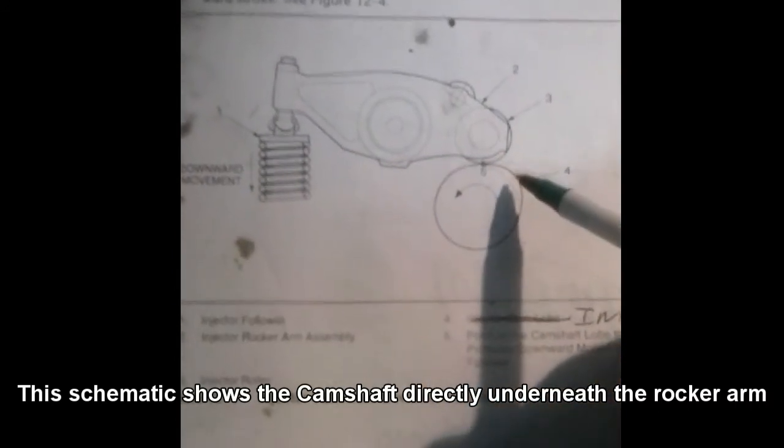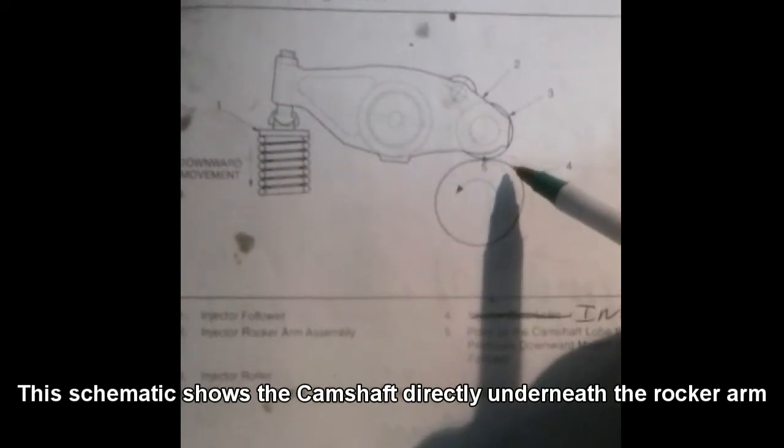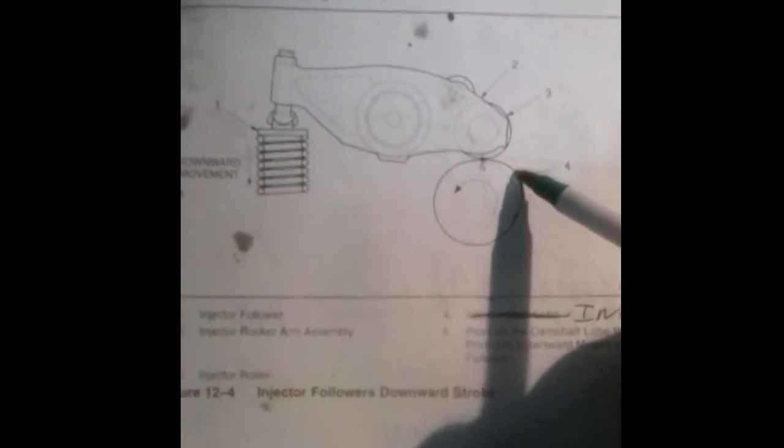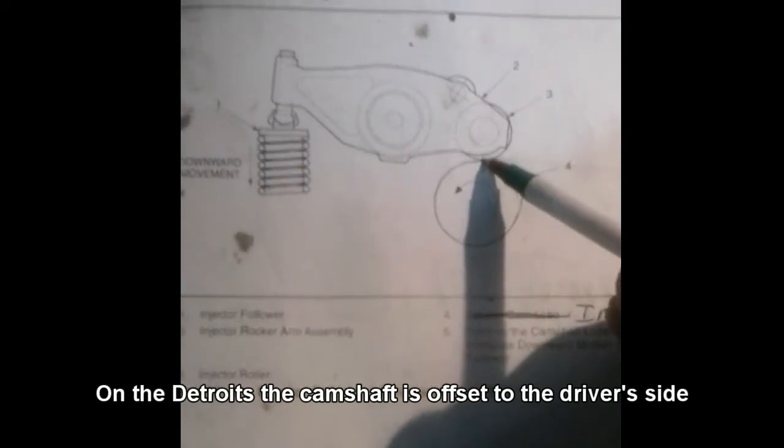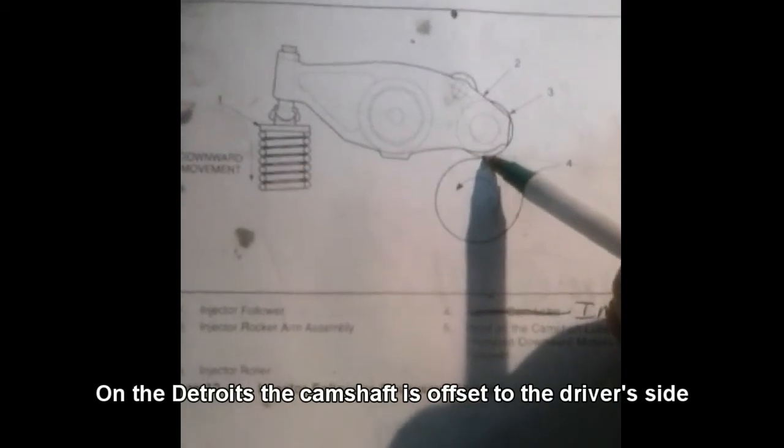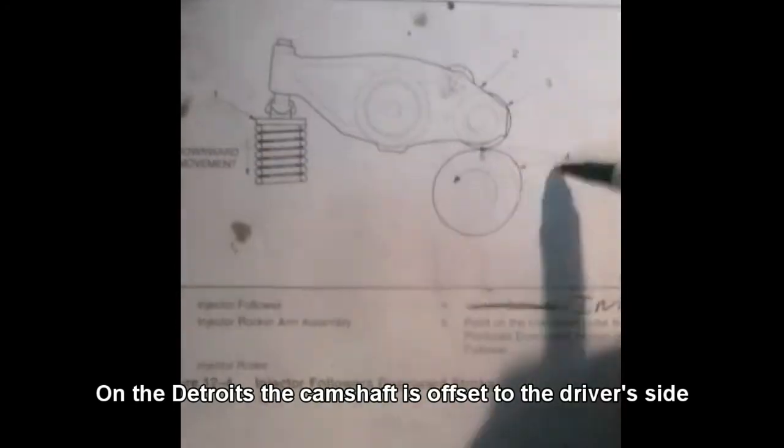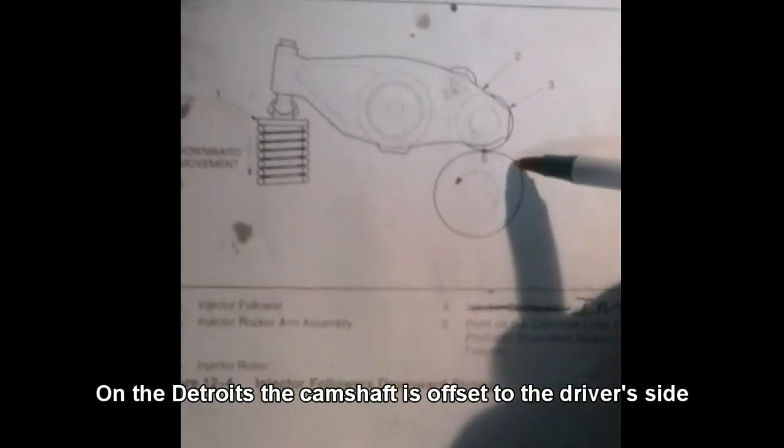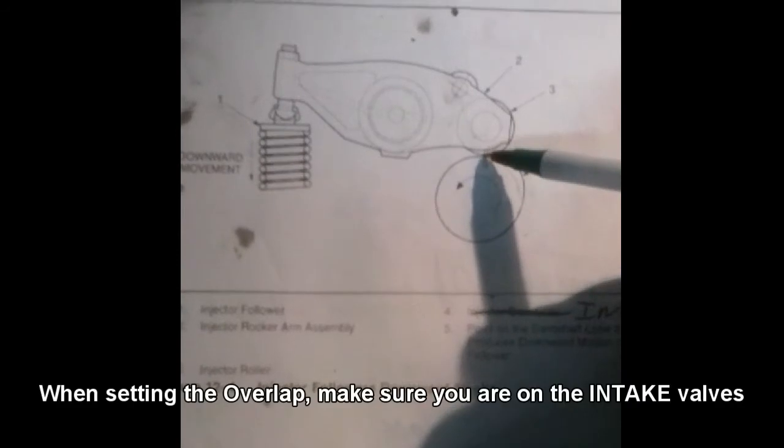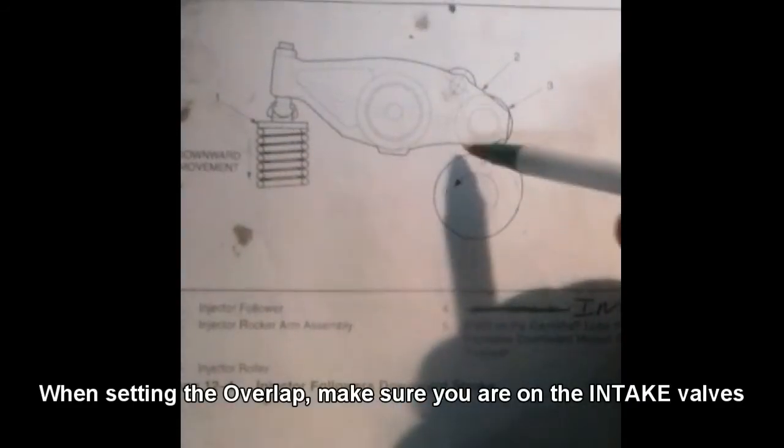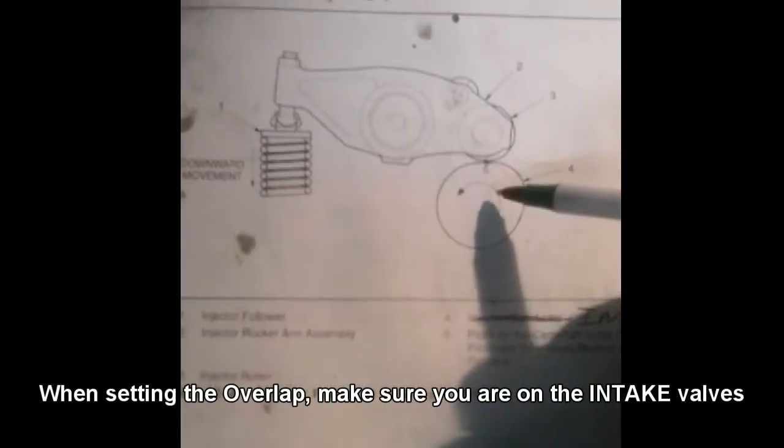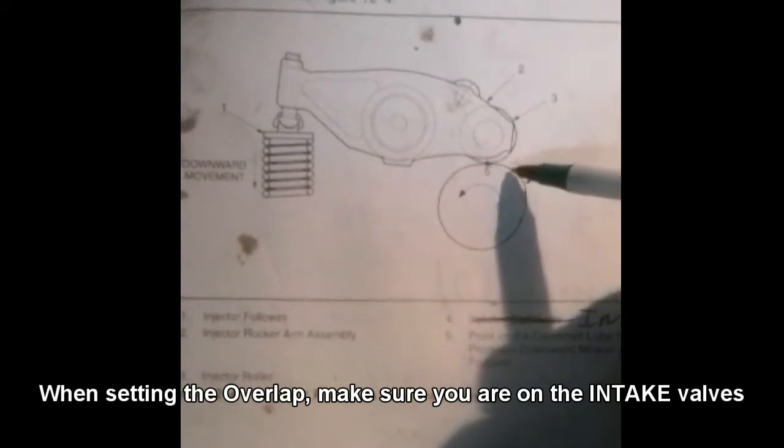On your intake valve, you will rotate the camshaft to directly under the roller bearing on your intake valve assembly. So your camshaft is going to be more likely about five to ten degrees towards the passenger side of the truck if you're looking at it.